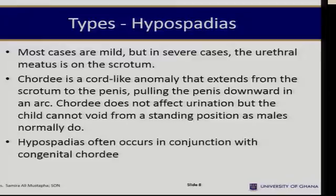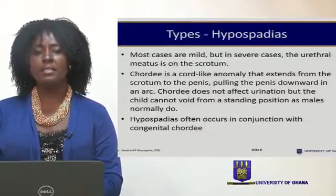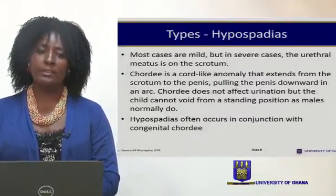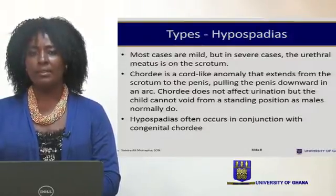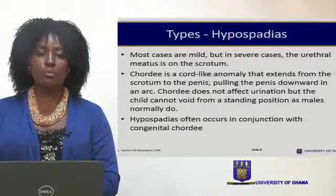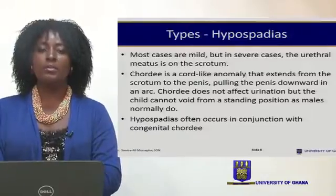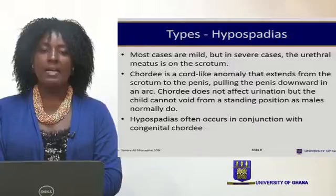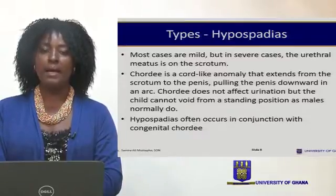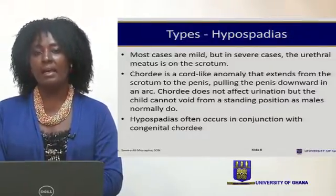There are variations ranging from mild to severe. In severe cases, this can result in the opening of the urethral meatus even on the scrotum. Another variation is chordae — a chord-like anomaly that extends from the scrotum to the penis, causing the penis to arc or bend downwards. When this happens, urination is not a problem, but the male child cannot urinate in the normal standing position. Hypospadias often occurs in conjunction with congenital chordae.